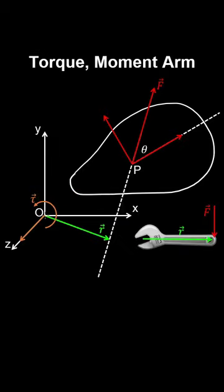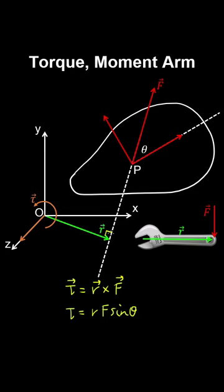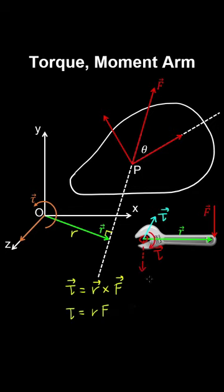We can choose a radial vector from a pivot that is perpendicular to the line of action of a force. Since theta equals pi/2, the magnitude of the torque is simply R times F, where R is the moment arm — the distance between the pivot point and the line of action of the force. For example, with a socket wrench tightening a bolt, drawing a vector from the pivot to the line of action of the force and applying the right-hand rule shows a clockwise torque, so the torque vector points into the screen.